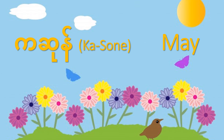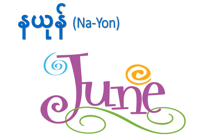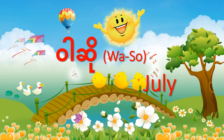The second month is Kaso, which is May. The third month is Nayo, which is in June. And the fourth month is Wazo. Wazo is in July.